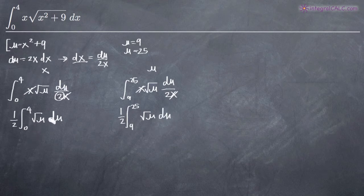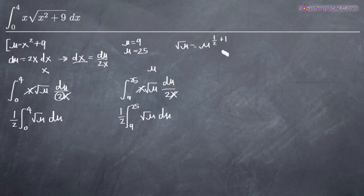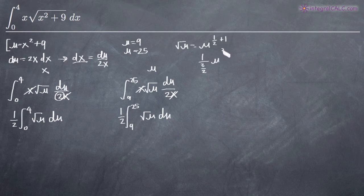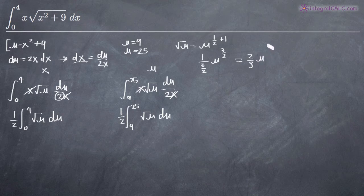Now we can go ahead and integrate the square root of u. Remember that the square root of u is the same thing as u to the 1 half power. When we integrate, we add 1 to the exponent and then divide by the new exponent. So 1 half plus 1 gives us 3 halves. We'll end up with 1 over 3 halves times u to the 3 halves. Dividing 1 by 3 halves — we flip that fraction — we get 2 thirds times u to the 3 halves.